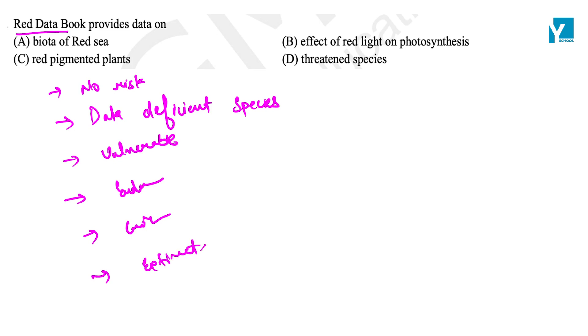So in these species' data, we provide Red Data Book. Red Data Book's main motive is so that we have time to time information about which species is endangered, which species is critically endangered, and which species is extinct. Red Data Book gives us an idea about threatened species.